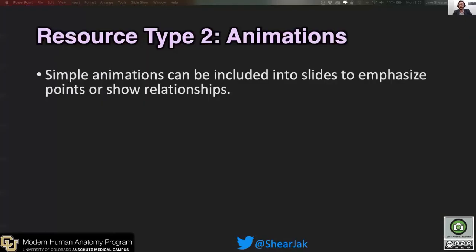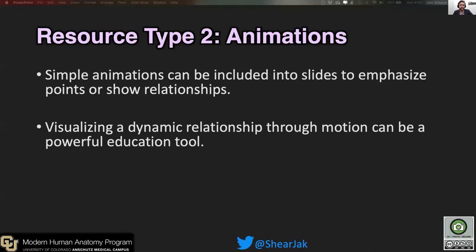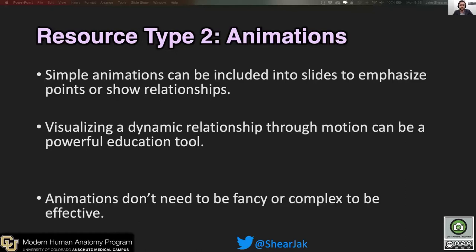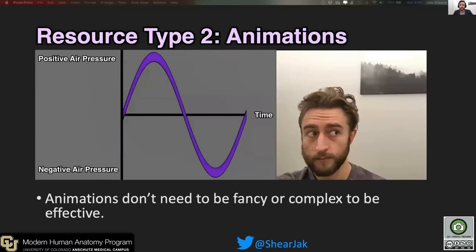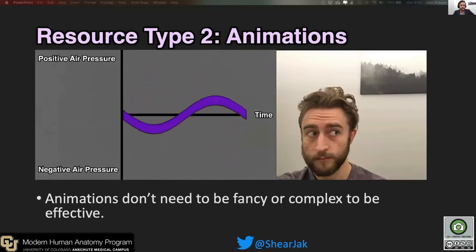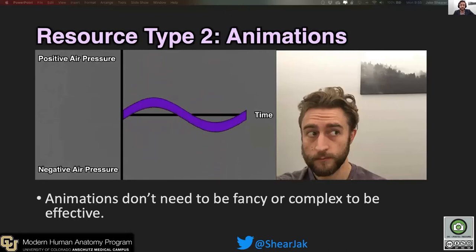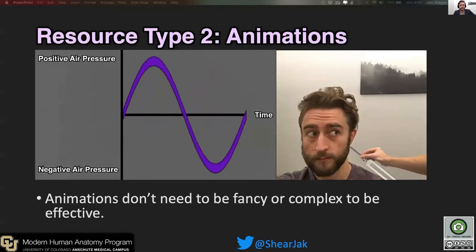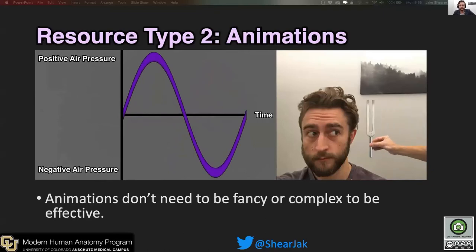Another resource that I developed were animations. Simple animations can be included into slides to emphasize points and show relationships, because visualizing dynamic relationships through motion can be a very powerful educational tool. Animations don't need to be fancy or complex to be effective. Here are two more examples from the auditory lecture that I gave. This first animation took me about 20 minutes to make in Maya, and it shows the relationship of changing air pressure over time for amplitude of sound. And due to the school closures, I didn't have access to a tuning fork, so using Photoshop, I made myself a tuning fork and administered a Rhyme test to illustrate how it's done.